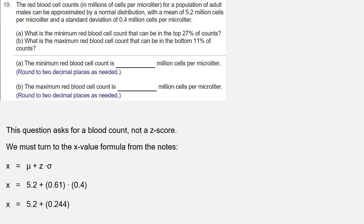which is 5.2 plus 0.244, which is 5.444. So the minimum count rounded to two decimal places is 5.44 million.